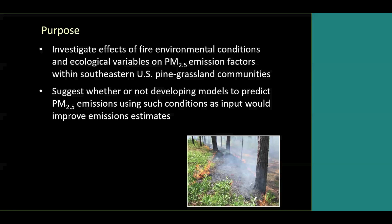The overall purpose of this study was to investigate effects of fire environmental conditions and ecological variables that might influence PM 2.5 emission factors, all within southeastern pine grassland communities. When I say pine grassland, I mean tree canopies lower than about 50% cover, so there's enough light on the ground to support continuous herbaceous ground cover that carries or is maintained by frequent fires. One of our purposes is to suggest whether developing models to predict these emission factors might improve emission estimates in the future.